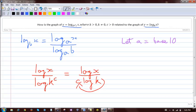After that, we can finally say that this would equal 1 over c times log base k of x, using the base change formula. So that's the relationship between log base k of x and log base k to the power of c of x.